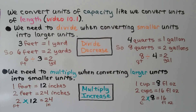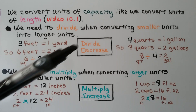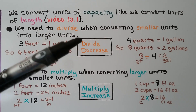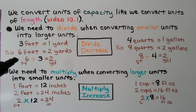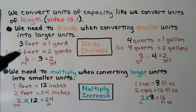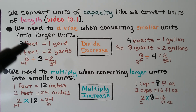We convert units of capacity the same way we convert units of length. We divide when converting smaller units into larger units — think: divide and decrease, both start with D. For example, three feet equals one yard, so six feet divided by three equals two yards.